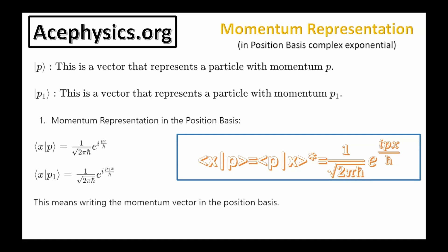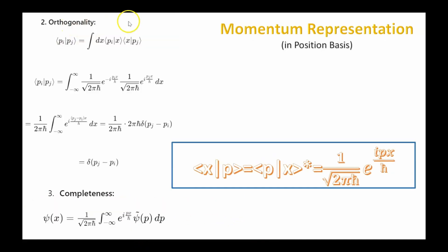Because if a function has one momentum value, it's necessarily spread out through all different position values — this is Heisenberg's uncertainty principle. This slide explains how we write the momentum vector in the position basis. The momentum functions satisfy orthogonality. The orthogonality condition ensures that different momentum states represented by complex exponentials are mutually exclusive.